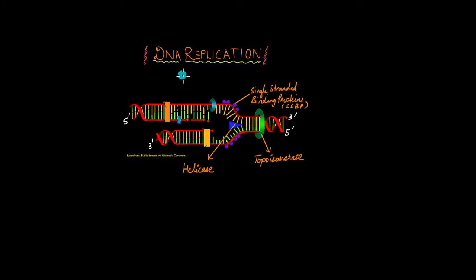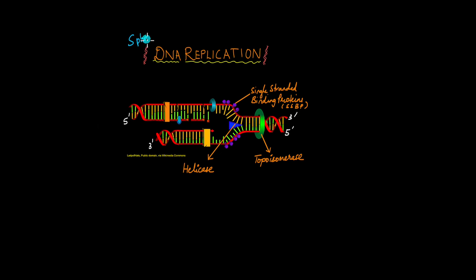Before a cell can divide into daughter cells, it needs to make sure that its DNA has replicated. This ensures that the daughter cells receive the correct amount of DNA when the cell eventually divides. The replication of DNA takes place in the S phase of the cell cycle within the interphase, and it's a process that involves a lot of enzymes and molecules.